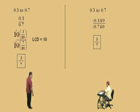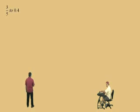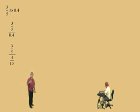So, let's do some more, Charlie. Now, 3 fifths to 0.4. Really, it's 3 fifths to 4 tenths, right? So, we'll start by writing 3 fifths over 0.4, and now we'll write the decimal 0.4 as its fraction 4 tenths. So, it's really 3 fifths over 4 tenths, right?